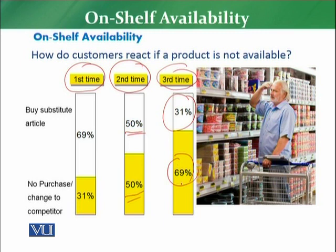This picture clearly shows that if a customer is not able to see the product on the shelf, the first time maybe he will shift to a substitute, the second time maybe he will shift to the competitor, and the third time for sure he will not buy from you — he will not visit your retail store or will buy from another competitor. This on-shelf availability has an impact on your overall business and overall sales of the retail store.